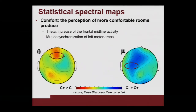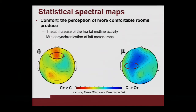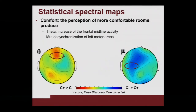As to the dimension of comfort, the perception of more comfortable rooms produced a theta increase of frontal midline activity, while we also observed synchronization of the motor areas in the mu rhythm.